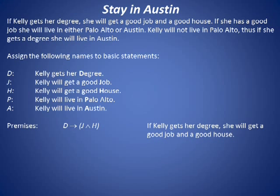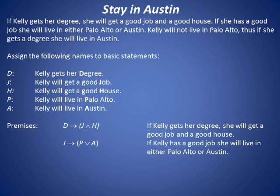From the story, we extract these premises. D implies J and H. That is, if Kelly gets her degree, she will get a good job and a good house. J implies P or A. That is, if Kelly has a good job, she will live in either Palo Alto or Austin. And finally,